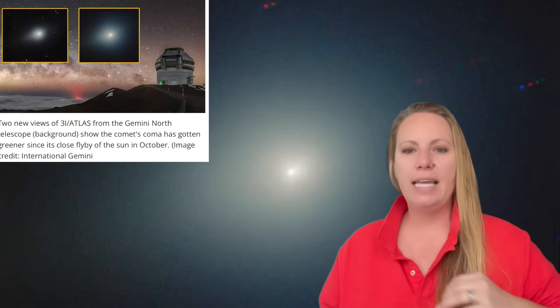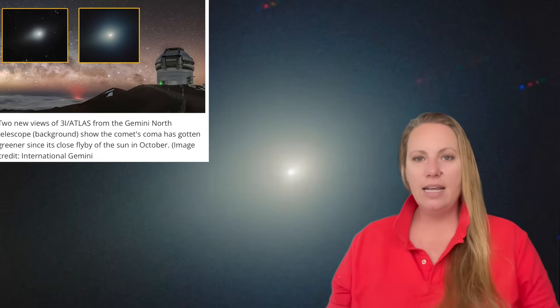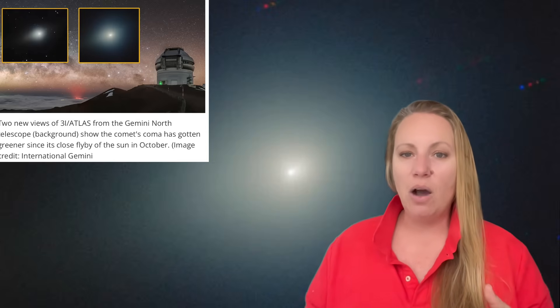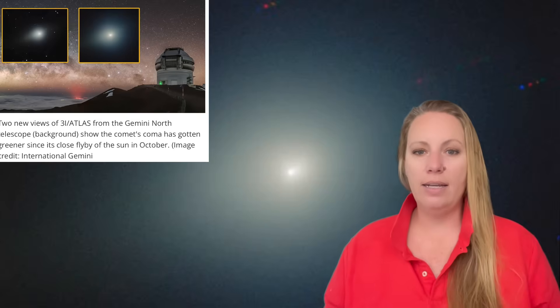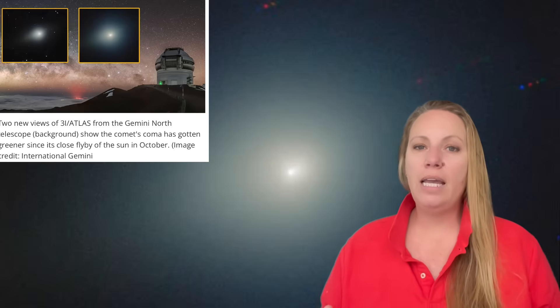Why does this matter? This color change tells us something very important. It means the chemical makeup of the gas coming off 3i Atlas changed near the sun. Different materials started coming out after it was heated more strongly by the sun. Some components likely burned off, others became more dominant.